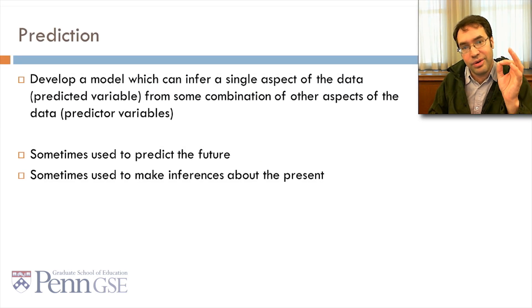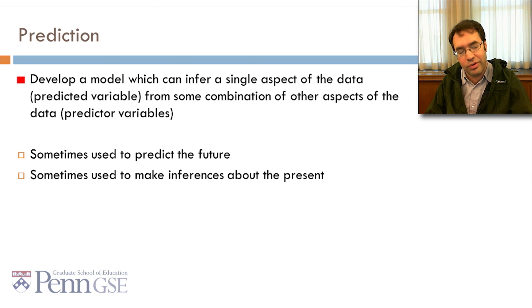You may remember from previous classes that in prediction, we developed a model which can infer a single aspect of the data, the predicted variable, from some combination of other aspects of the data, the predictor variables. We sometimes use this to predict the future, and we sometimes use it to make inferences about the present.